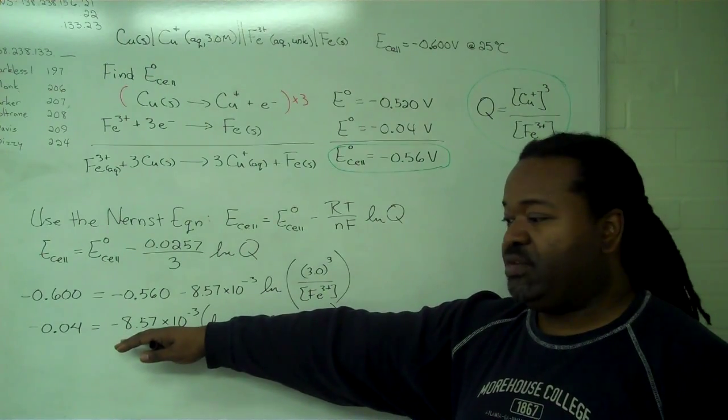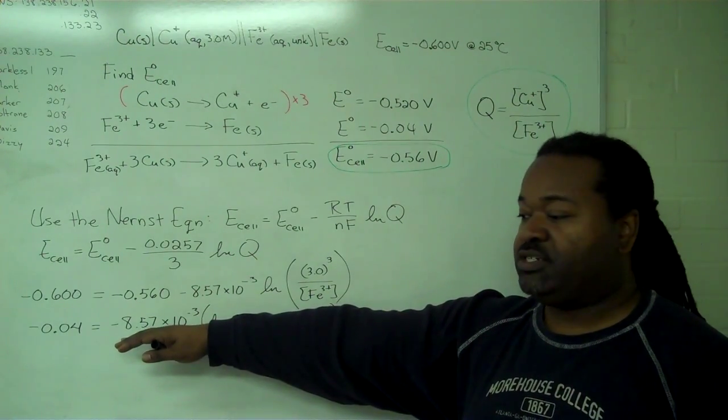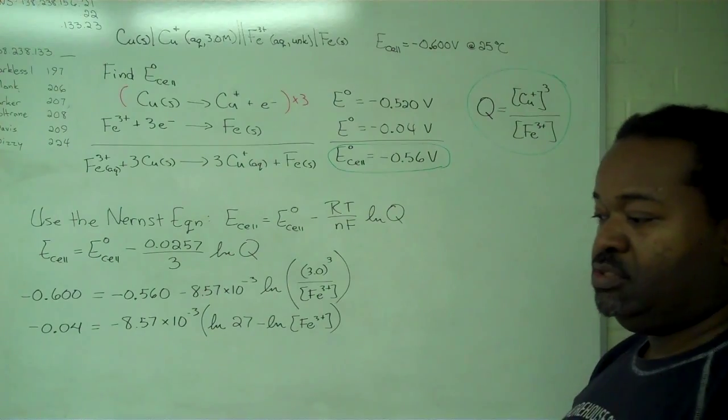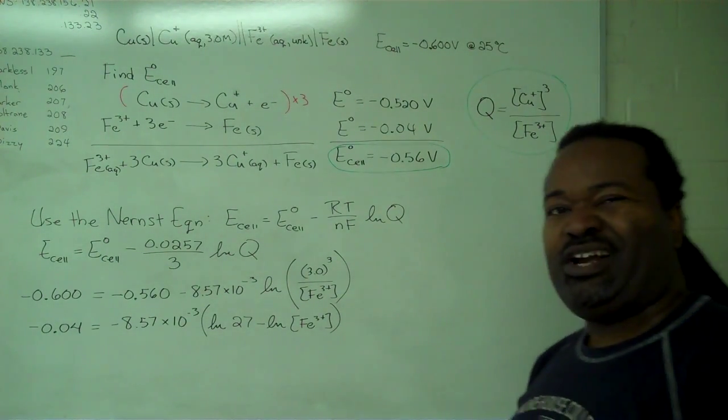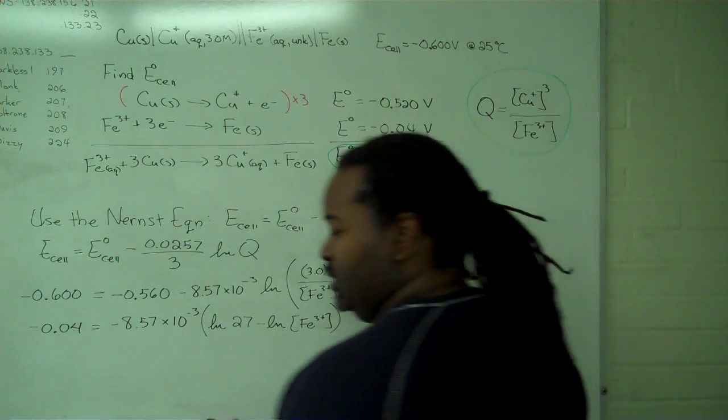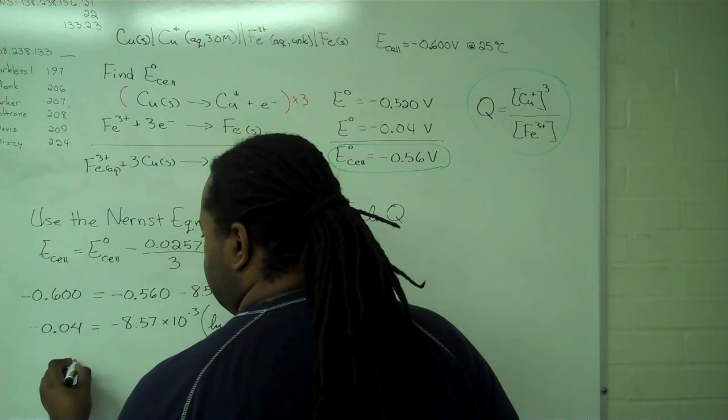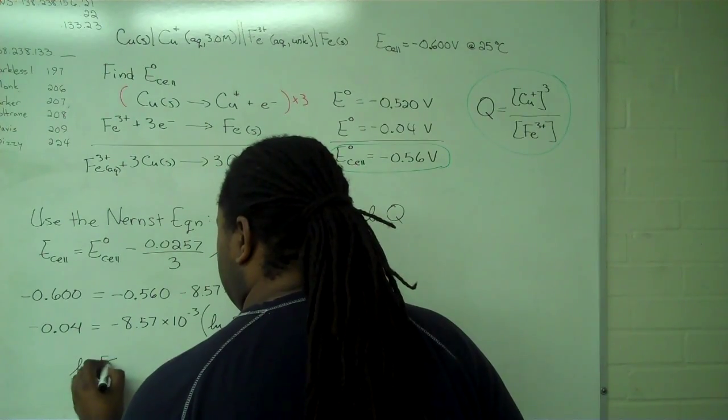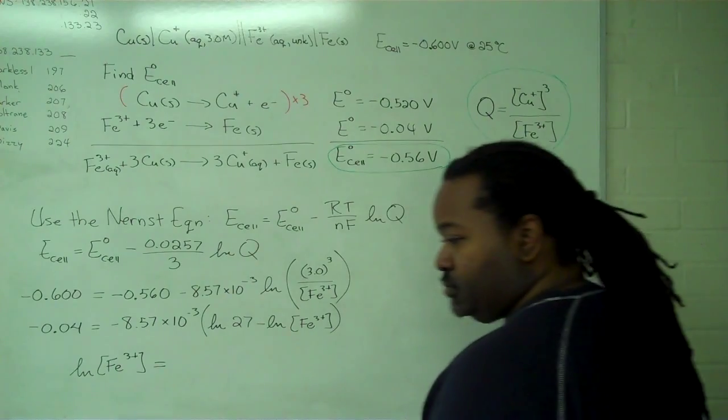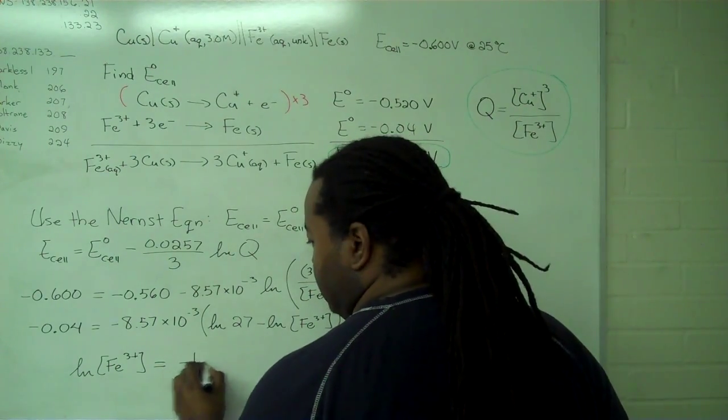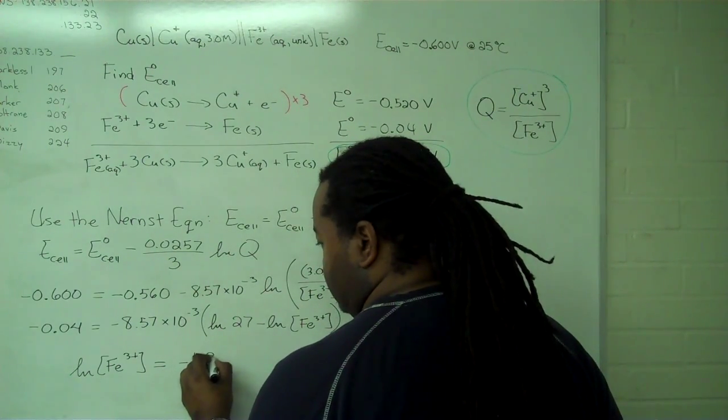So now we're going to divide both sides by this prefactor and do the subtraction, just to skip past some of that algebra. And what we find then is that the natural log of our iron concentration is equal to negative 1.37.